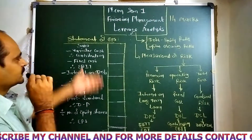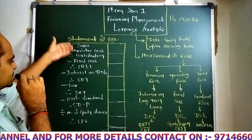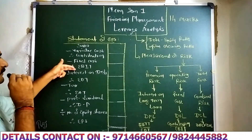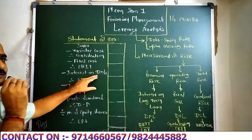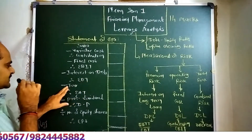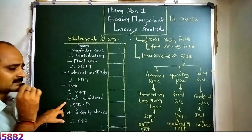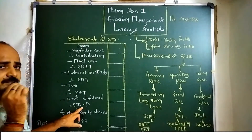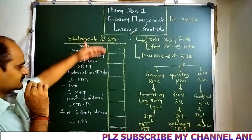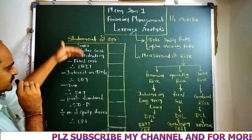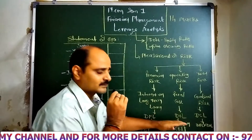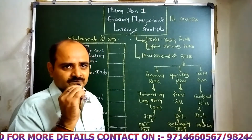Before that, we need to prepare a Statement of Earnings Per Share. The statement is: Sales minus Variable Cost gives Contribution; minus Fixed Cost gives Earnings Before Interest and Tax (EBIT); minus Interest on debentures or interest on loan gives Earnings Before Tax (EBT); minus Taxes gives Earnings After Tax; minus Preference Dividend gives Divisible Profit; divided by Number of Equity shares gives Earnings Per Share. This data will be applied in the three formulas to find out the different types of leverages.